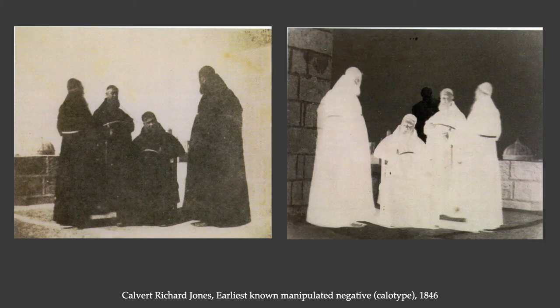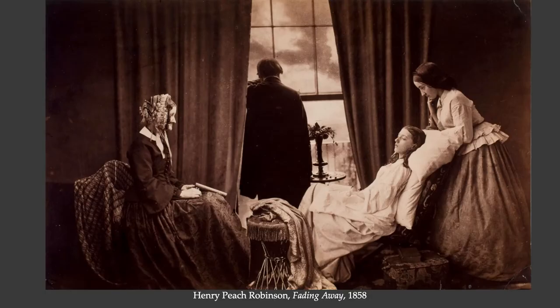From the very beginnings of the positive-negative process with the calotype — this example goes back to 1846 — manipulations of the negative by the photographer were part of how the calotype was used from its very beginnings. This is an example of the kind of photograph made as an artwork for popular consumption as a collectible art print.